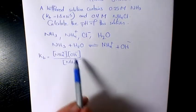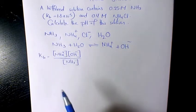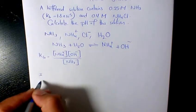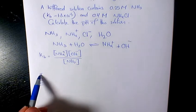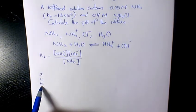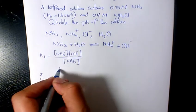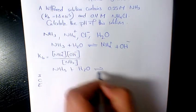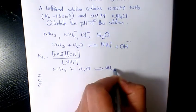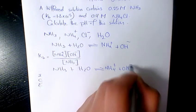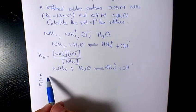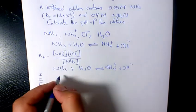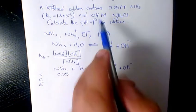In order to find the concentration at equilibrium we need to have the ICE table: initial, change, equilibrium. The formula I already wrote it, let's write it one more time. Initially we have 0.25 ammonia and 0.4 ammonia ion.